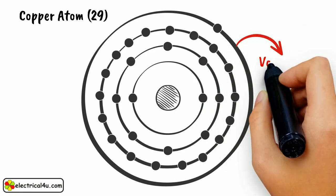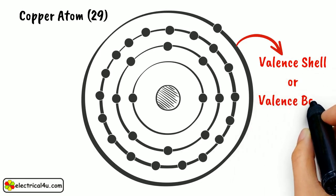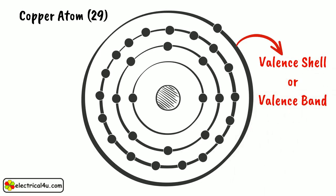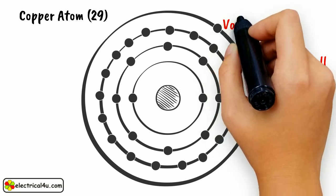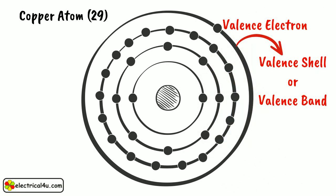The outermost shell of an atom is known as the valence shell or valence band, and the electrons that inhabit that outer shell are called valence electrons. The more full the valence shell, the less likely it is that an atom will lose electrons when a force is applied.